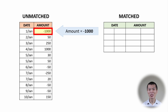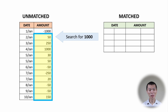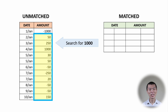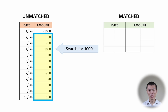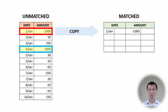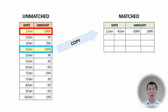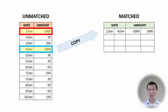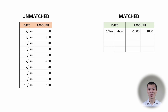In round one, we get the first number — in this case, negative 1000. The contract amount to search for is positive 1000. We search through the list: 50 is not 1000, 250 is not 1000, and then we find it. The pair — positive 1000 and negative 1000 — is copied to the matched list, then both are removed from unmatched. This is the final result for round one.